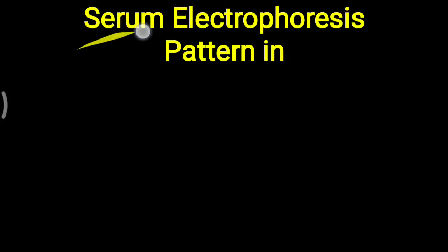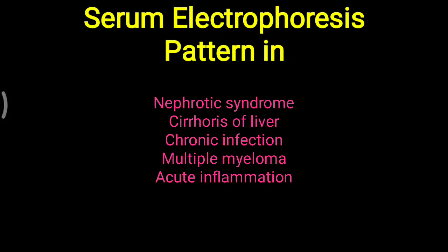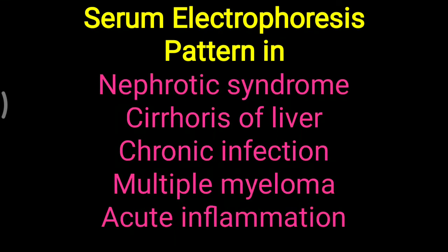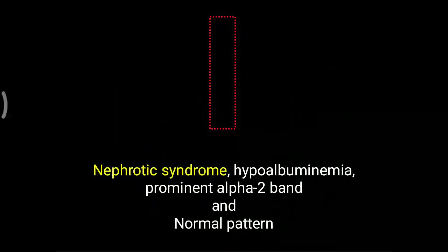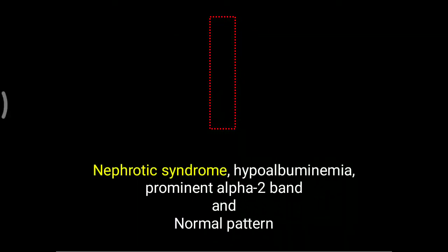Today we are going to discuss about serum electrophoresis patterns in nephrotic syndrome, cirrhosis of liver, chronic infection, multiple myeloma, and acute inflammation. By this serum electrophoresis, we can understand different clinical conditions and how these conditions can be diagnosed with the help of electrophoresis.